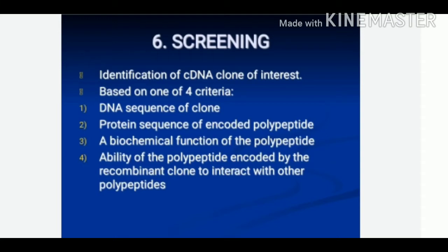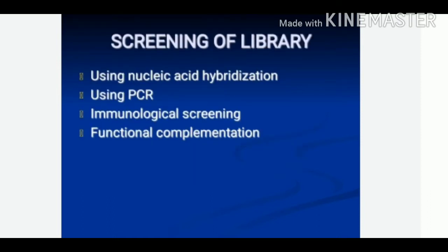First is the DNA sequence of the clone. Second is the protein sequence of the encoded polypeptide. Third is a biochemical function of the polypeptide, or the ability of the polypeptide encoded by the recombinant clone to interact with other polypeptides. We will discuss some of the methods for screening of a cDNA library: nucleic acid hybridization, screening using PCR, immunological screening, or functional complementation.